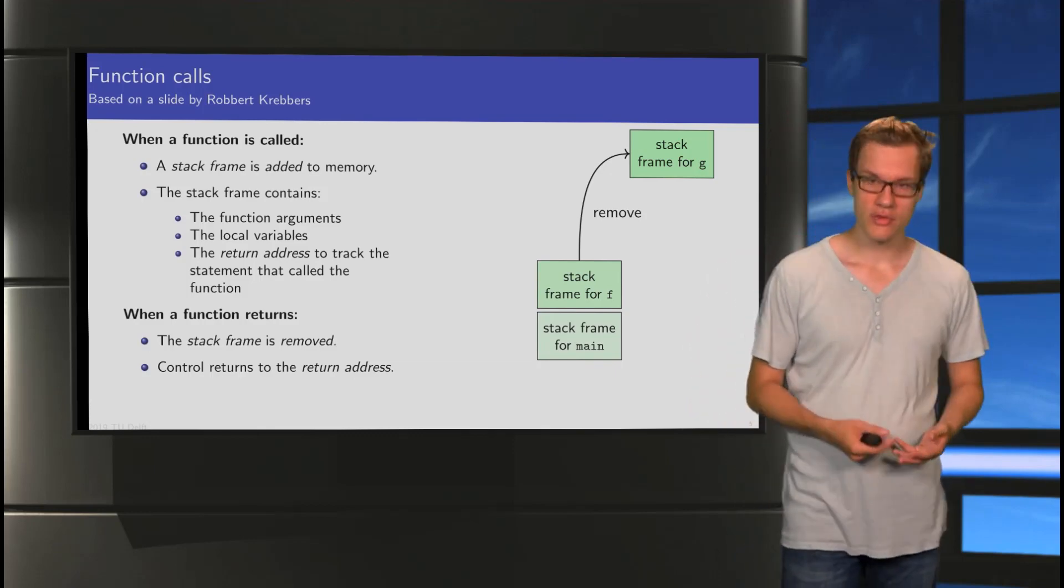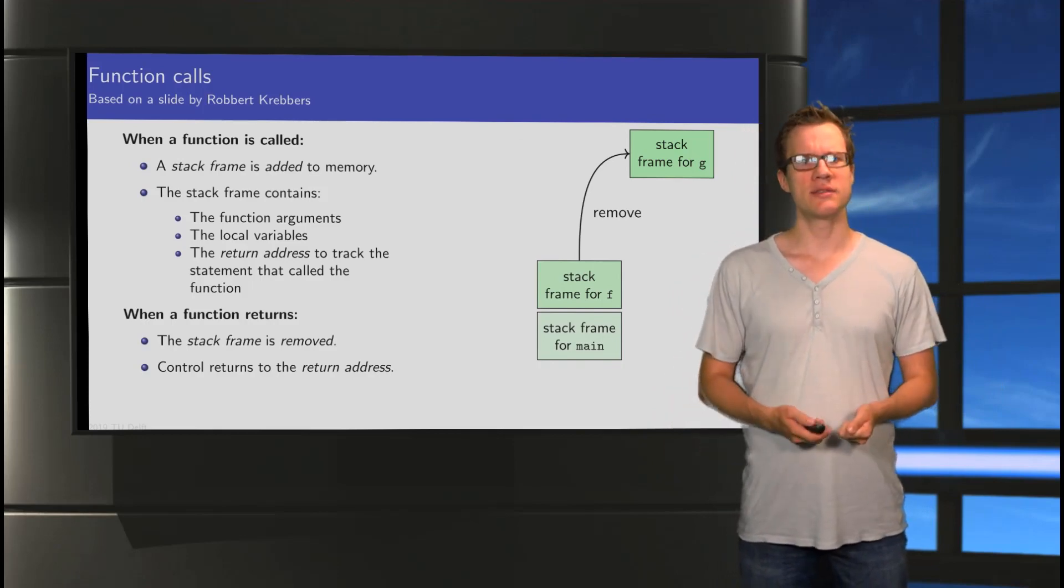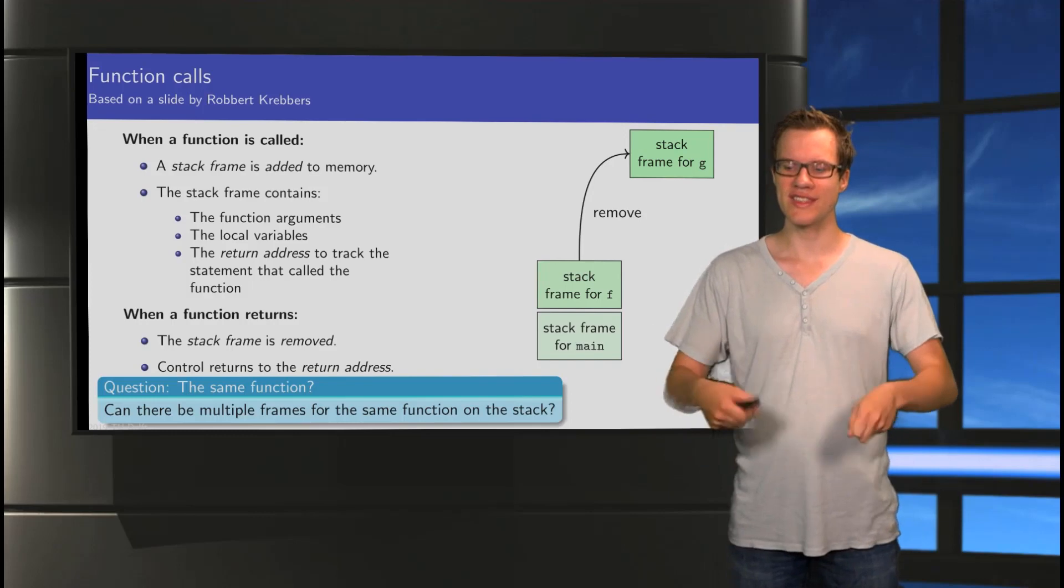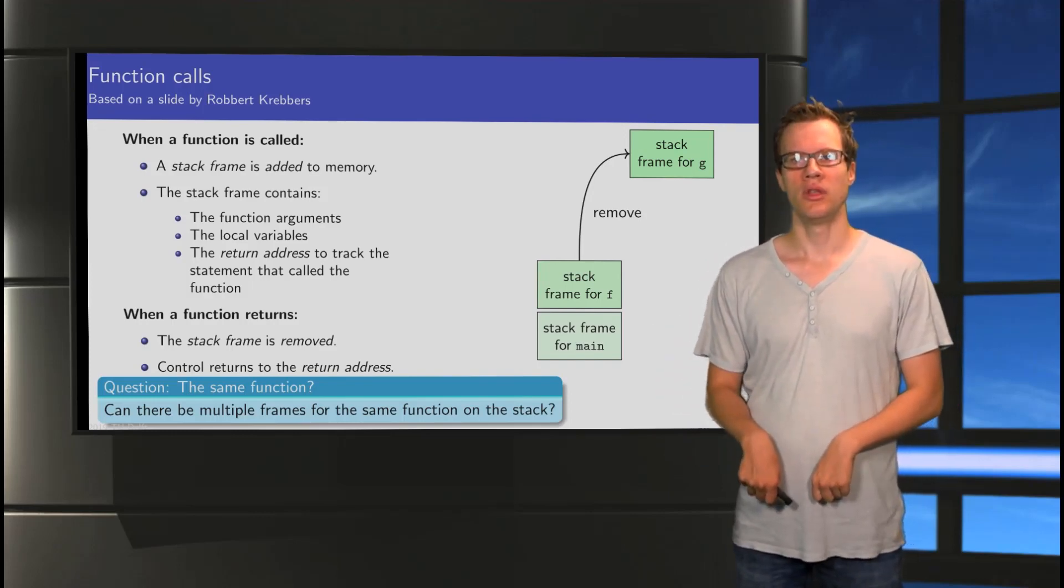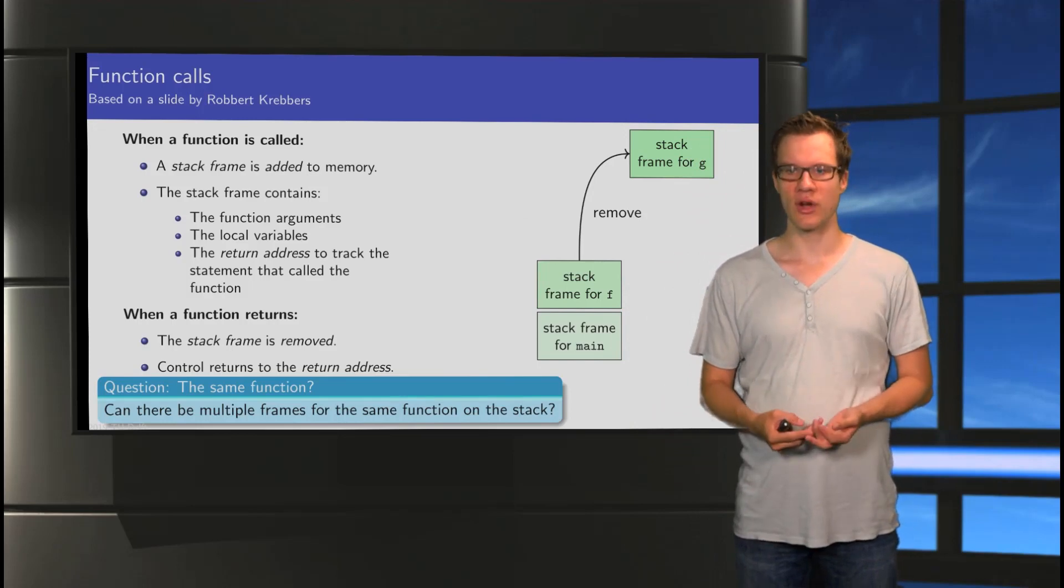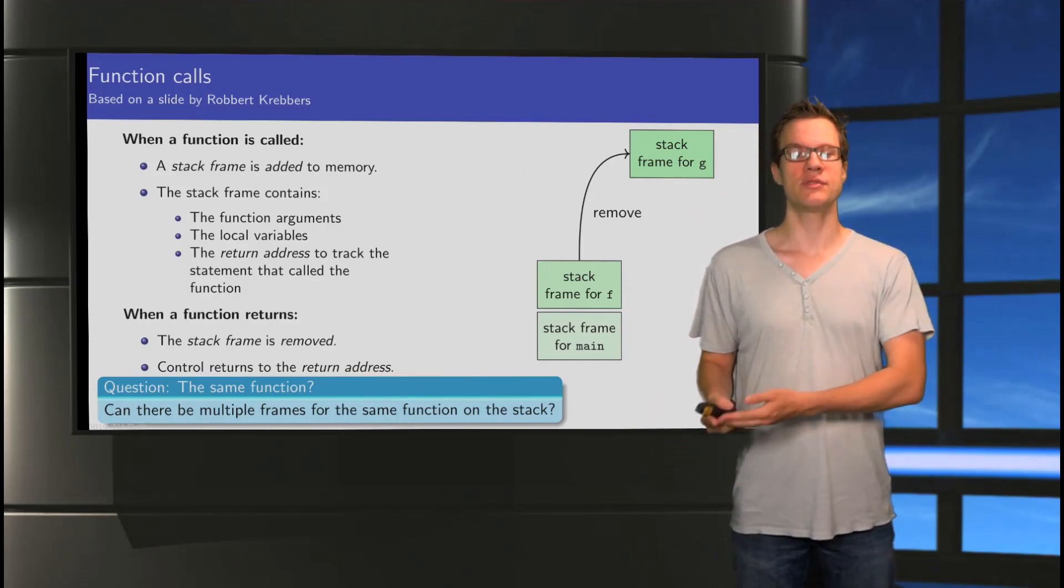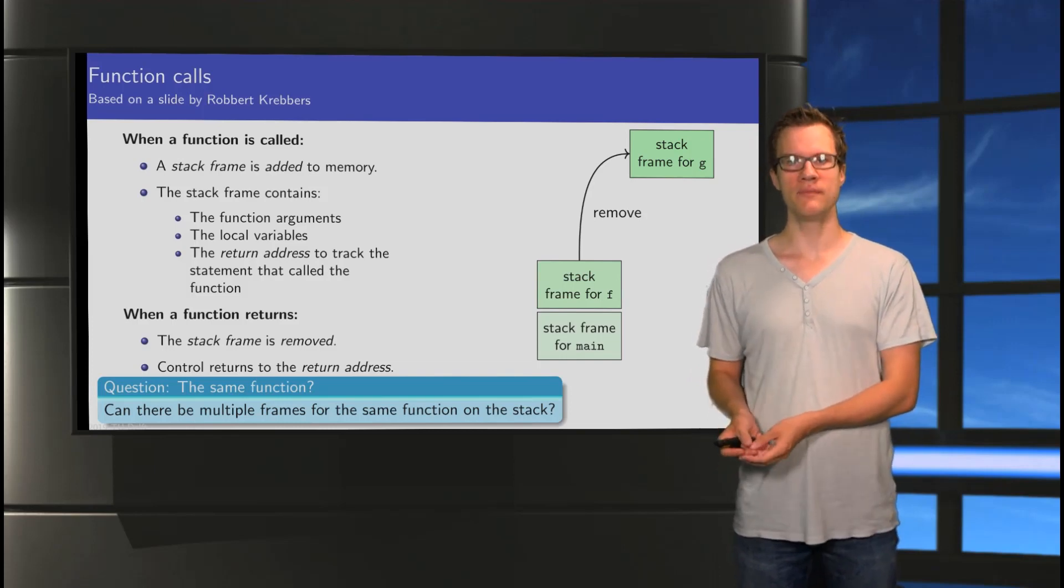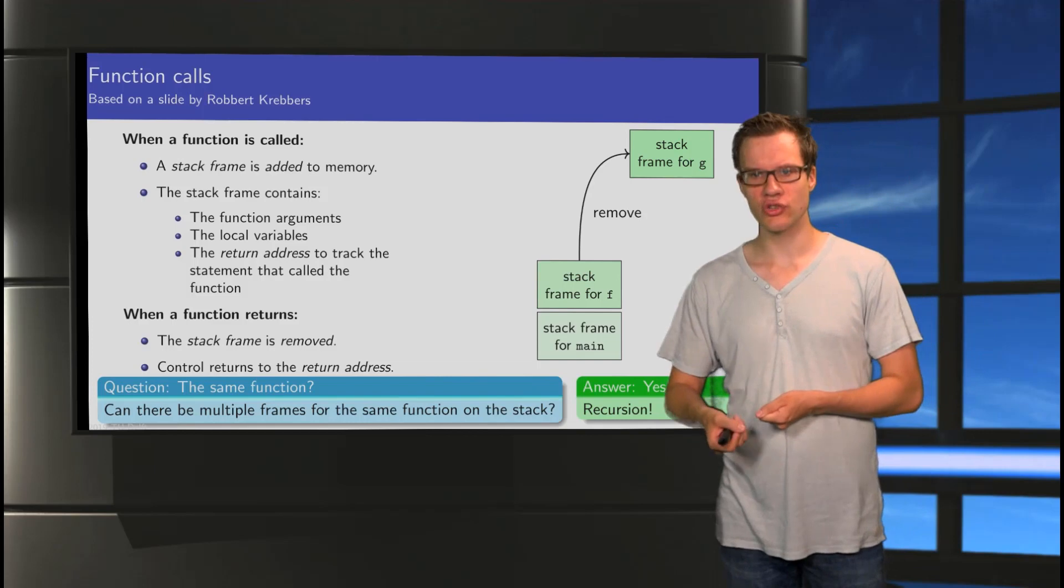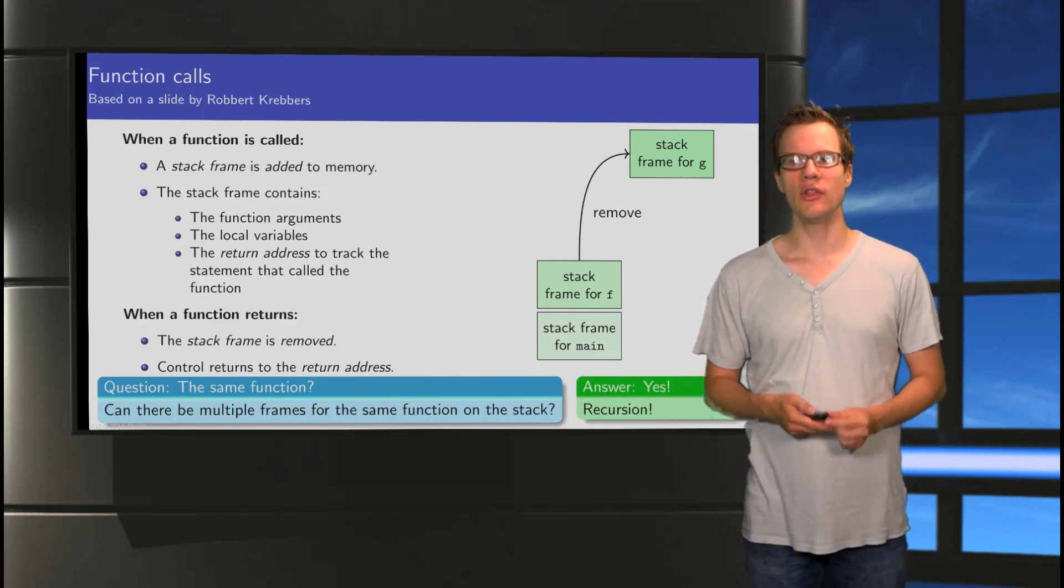So, in this example, we use three different functions, main, f, and g. But a question you may ask is, well, is it possible for multiple different stack frames to belong to the same function? So, rather than having main, f, and g, is it possible for f to have two stack frames, for instance? And the answer is yes, this is possible. Why? Well, through the power of recursion. This thing where a function calls itself.